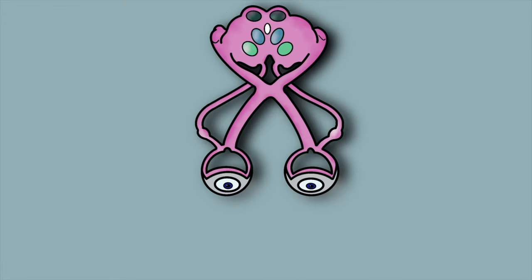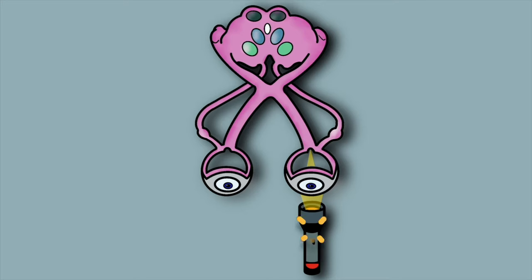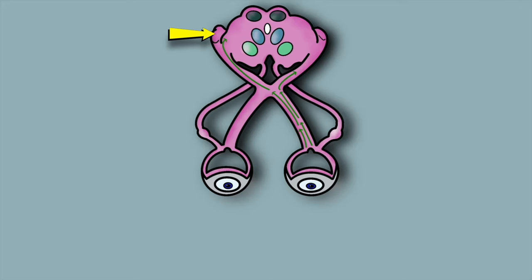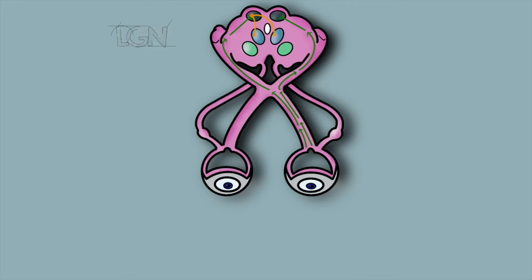The pathway of the pupillary light reflex begins in the eye, with the retinal ganglion cells of the retina receiving visual information from photoreceptors and conveying sensory information via the optic nerve. A proportion of axons deviate from synapsing at the lateral geniculate nucleus and instead project to synapse at the pre-tectal nucleus.